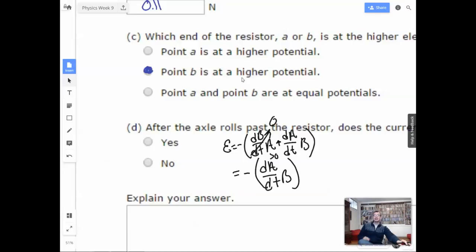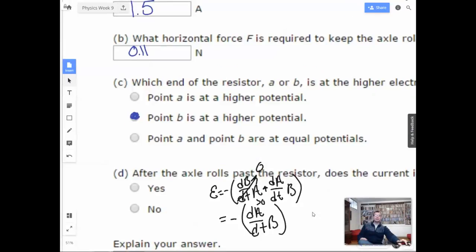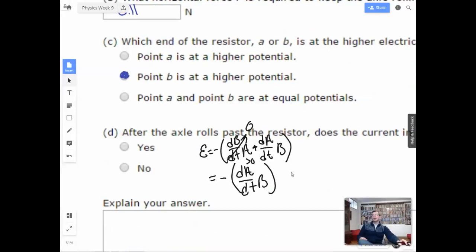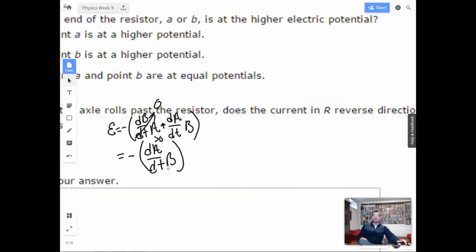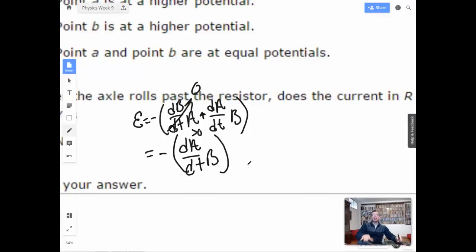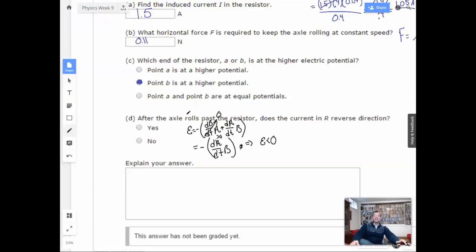Alright. So back to this guy then. So the rest is all true. Probably. Alright. So after the axle rolls past, now we have dA/dt. Well, we know that the change in area with respect to time is now getting bigger. So this is going to be a negative number, which implies that ε is less than zero. So the voltage is negative.